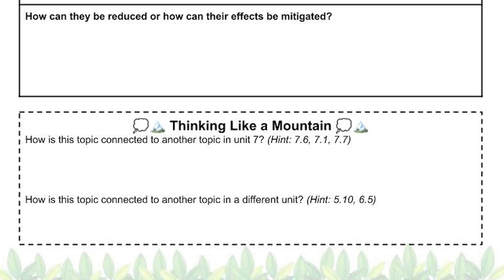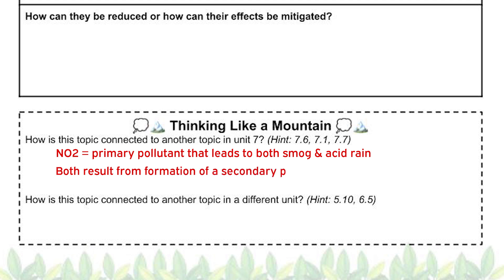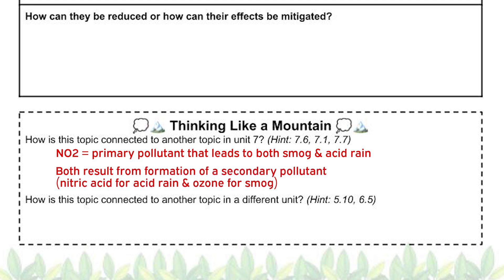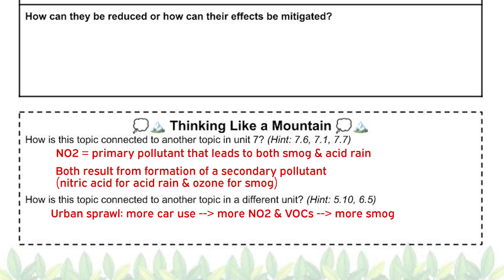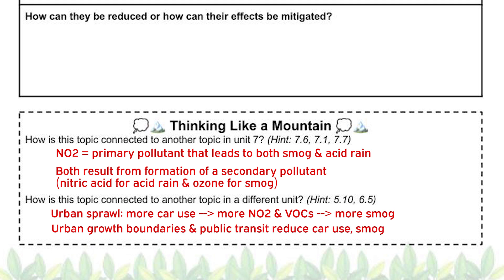Now that we've used our Unit 7 review template to review photochemical smog, let's try making a connection to another topic in Unit 7 and to a topic in a different unit. One topic in Unit 7 that could be connected to photochemical smog is acid rain, or Topic 7.7. They share a primary pollutant precursor in NOx, and they're also both forms of pollution that result from primary pollutants reacting with compounds like water and oxygen in the atmosphere to form secondary pollutants. In the case of acid rain, that secondary pollutant could be nitric acid, while in the case of smog, NOx reacts with VOX and oxygen to form the secondary pollutant ozone. A topic from Unit 5 that we could connect photochemical smog to is urban sprawl, or Topic 5.10. As cities spread out and experience urban sprawl, this leads to more and more car traffic per person. Smart growth strategies like urban growth boundaries and building walkable cities with effective public transportation can be great solutions to photochemical smog since they decrease the amount of gasoline burned for transportation.